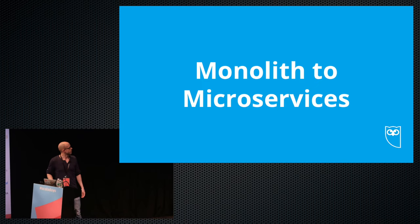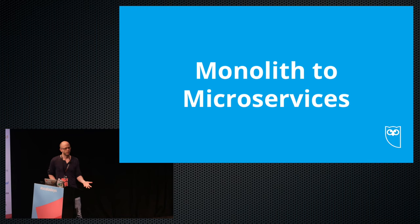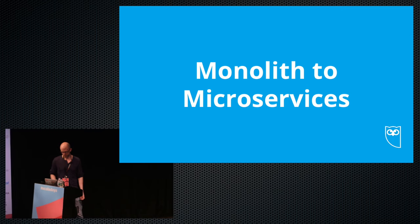I want to start off by showing some of the types of complexity and sources of errors that are often encountered when breaking up a monolith into a set of small microservices.